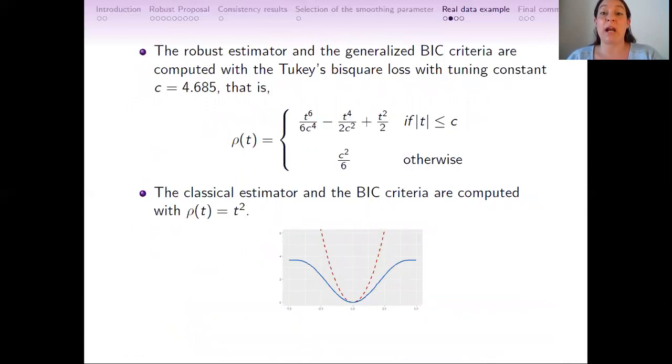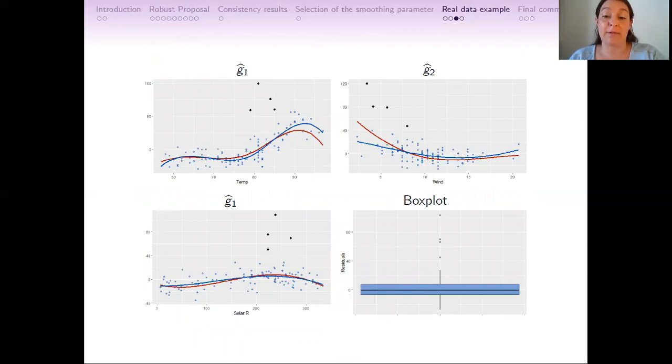In order to compute the robust estimator and the generalized BIC criteria for selecting the number of terms in the basis of B-splines, we used the Tukey's bisquare loss, and the classical estimator and the BIC criteria used the quadratic function. We also considered cubic splines, that is the degree of each B-spline is equal to 3, and same number of terms in the sum for the approximation of each additive function. After computing the BIC criteria, five terms for each additive function and both estimators were selected. These plots show the estimated curves for both classical in red and robust in blue fits together with the partial residuals obtained by the robust estimation. Even though the shape of the estimated components are similar, some differences in their pattern can be highlighted.